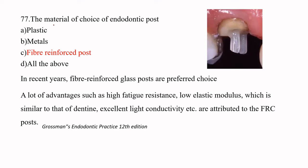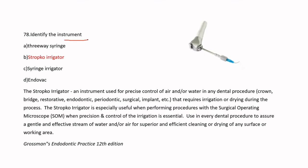The material of choice for an endodontic post is fiber-reinforced post. Plastic posts are brittle and not preferred; metal posts are hard and cannot be adapted to root shape. In recent years, fiber-reinforced posts are preferred due to high fatigue resistance, low elastic modulus similar to dentine, and excellent light conductivity.